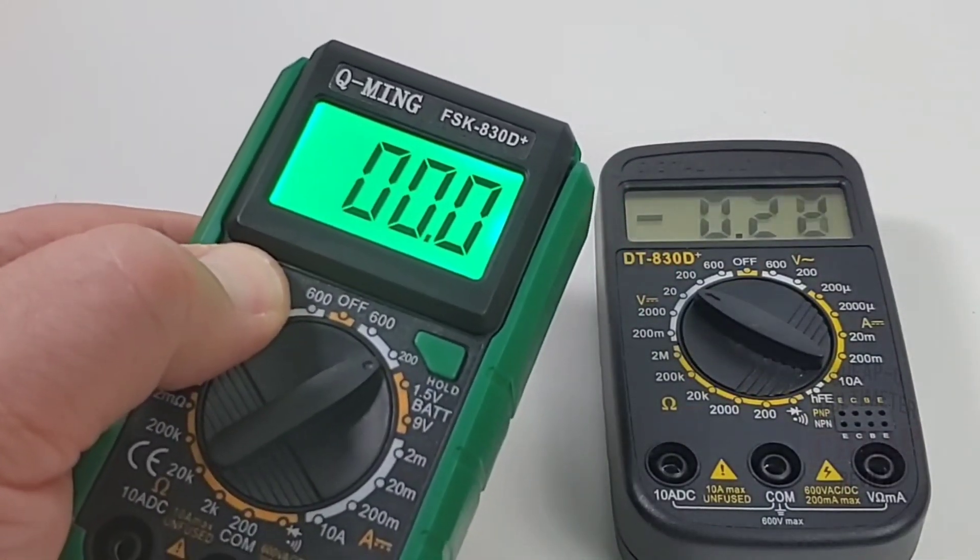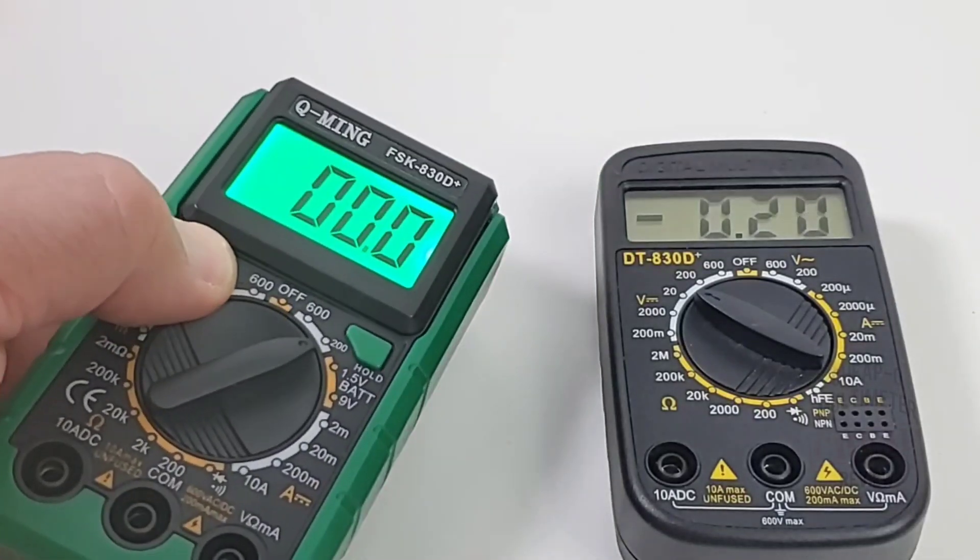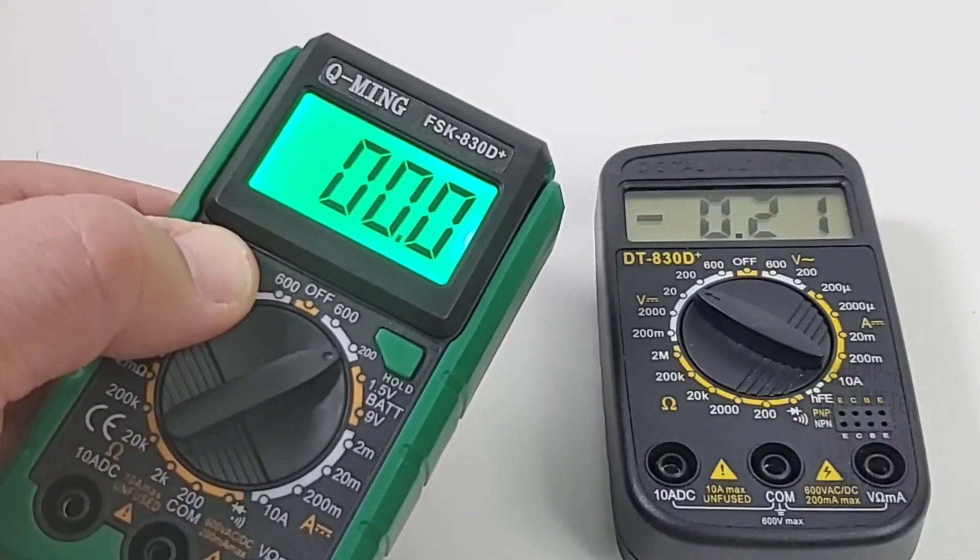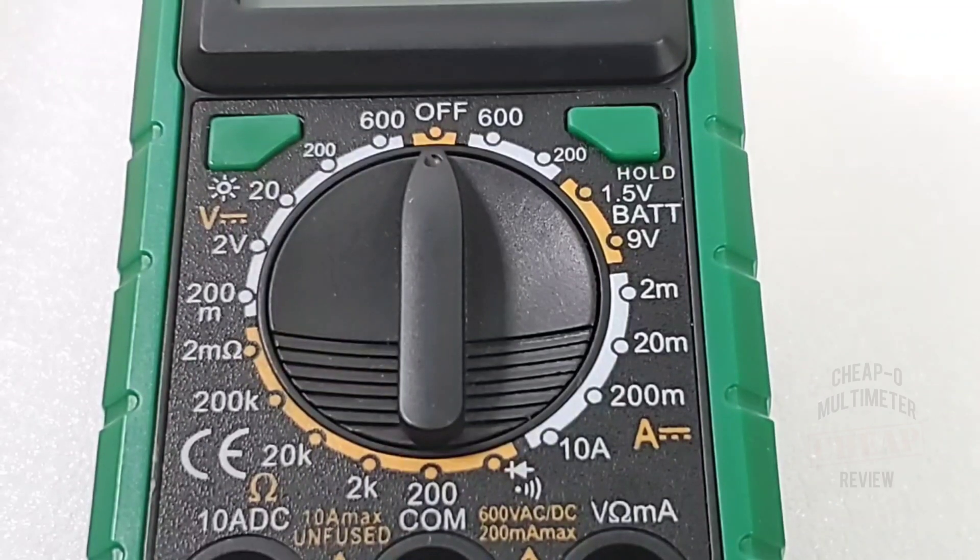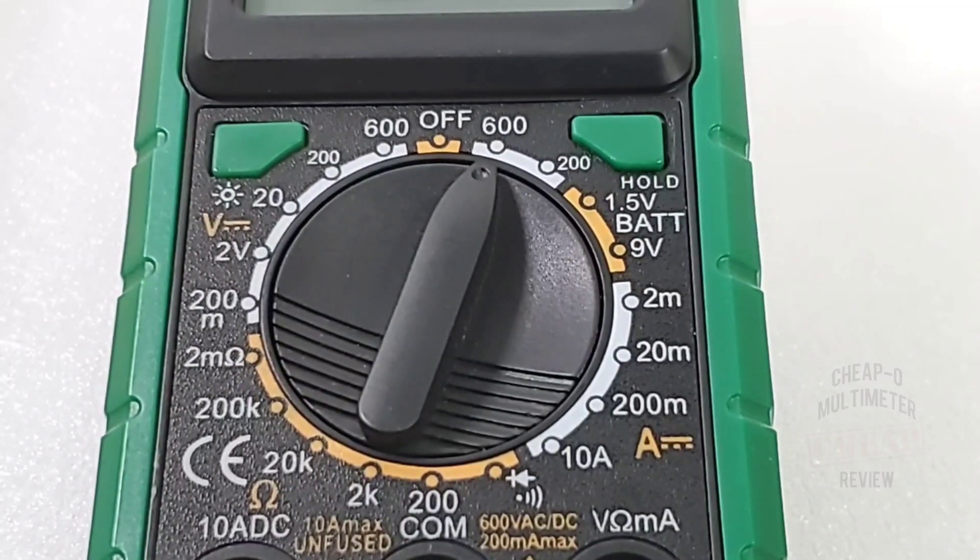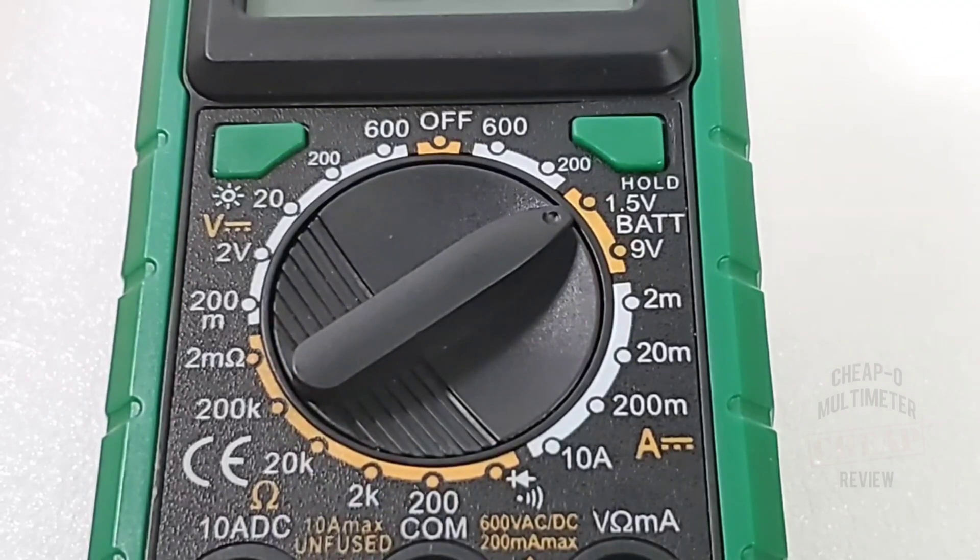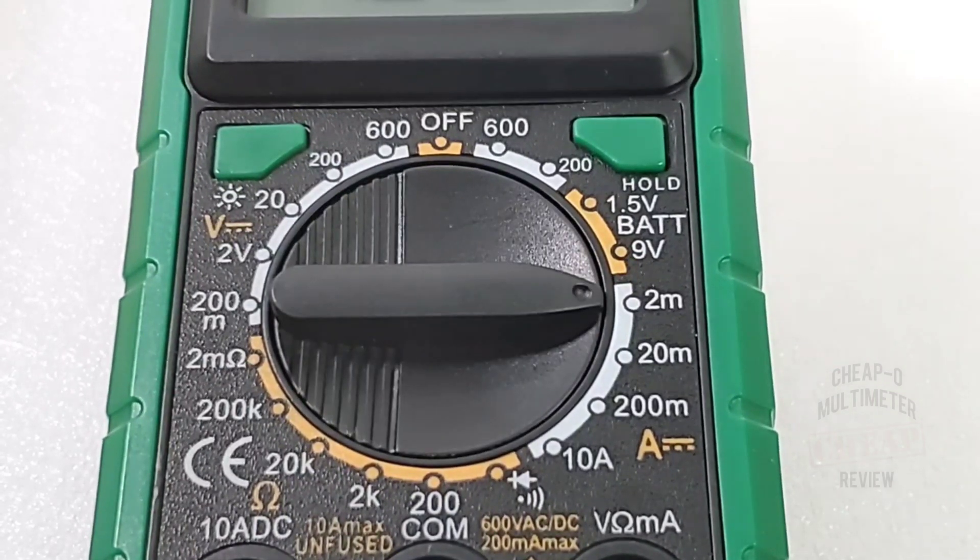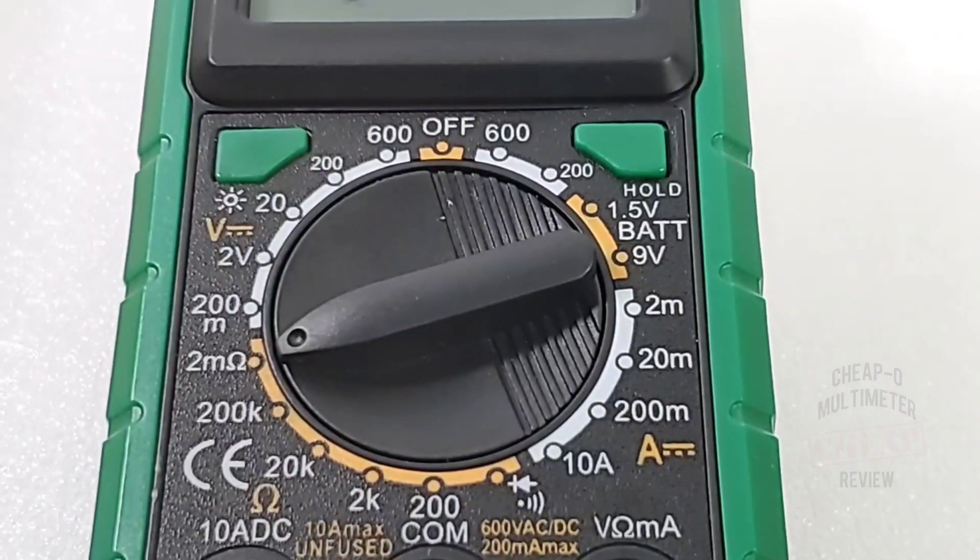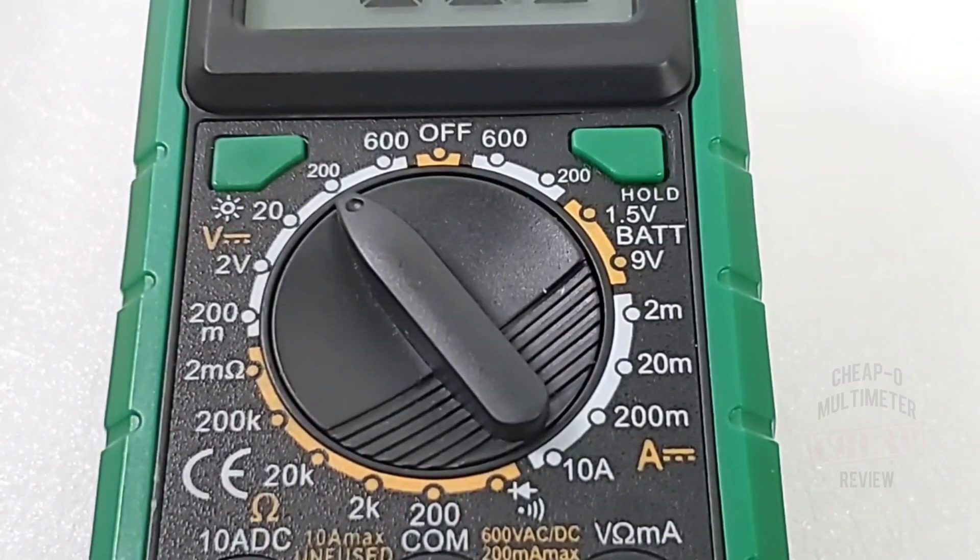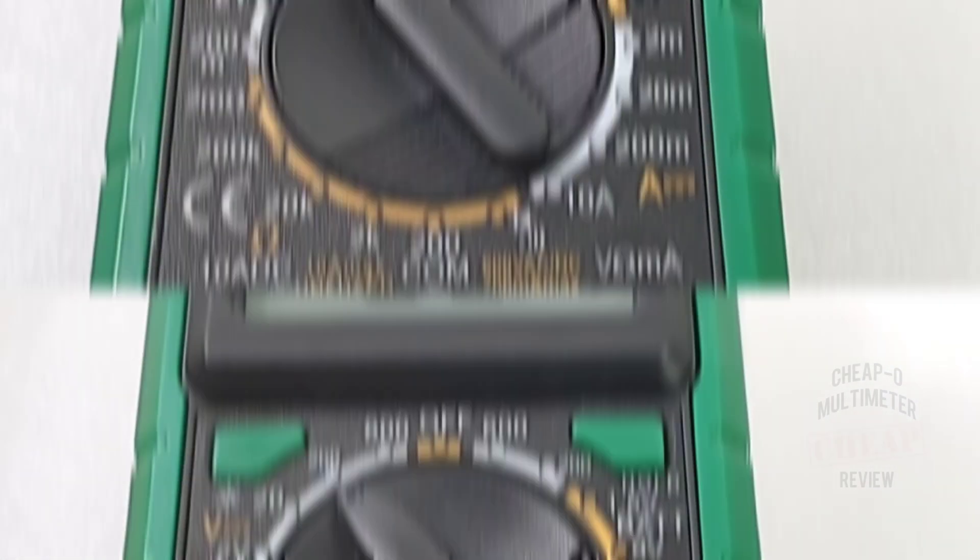Starting off, the rotary selector switch at the midnight or off position: volts AC up to 600 volts, battery test mode 1.5 and 9 volts, DC current up to 10 amps, continuity and diode, resistance up to 2 mega ohm, DC volts up to 600 volts.